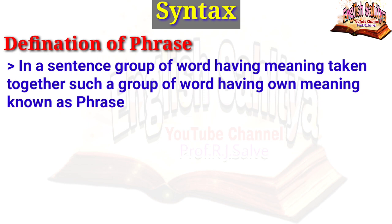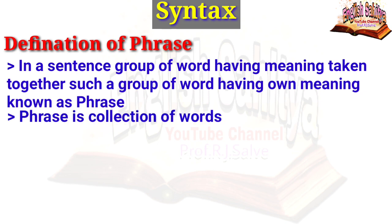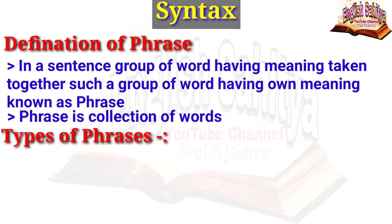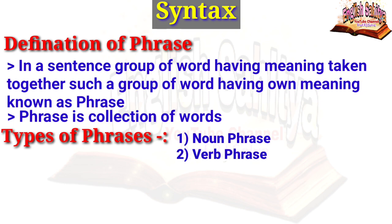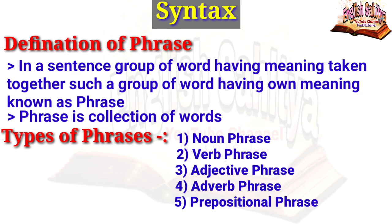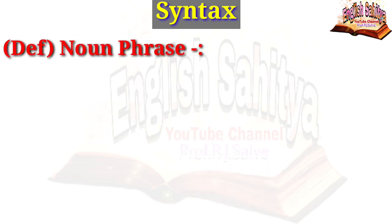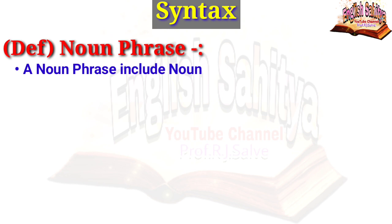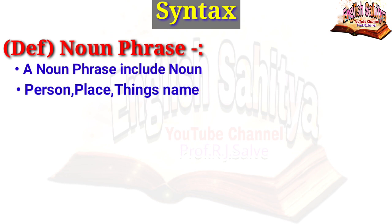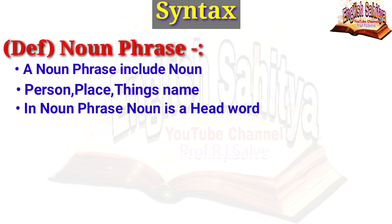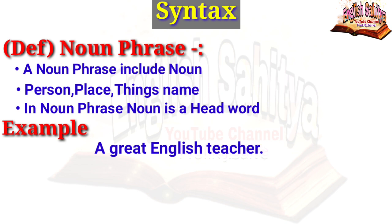A phrase is a group of words having meaning taken together. Such a group of words with its own meaning is known as a phrase. A phrase is a collection of words. There are many different types of phrases used in a sentence: noun phrase, verb phrase, adjective phrase, adverb phrase, and prepositional phrase. We will discuss each of these.